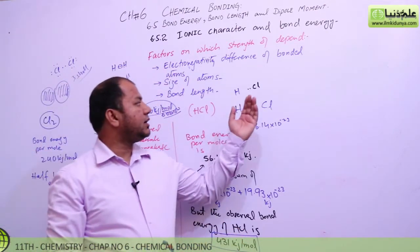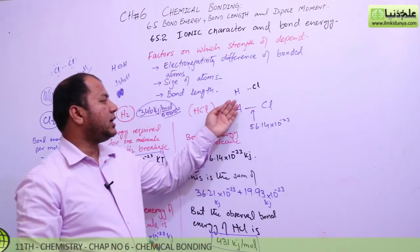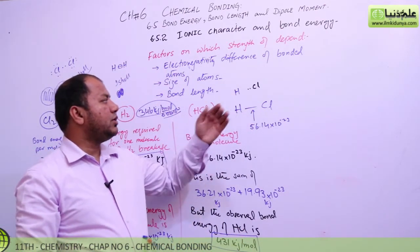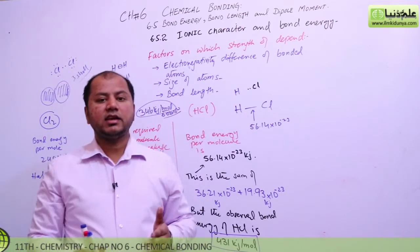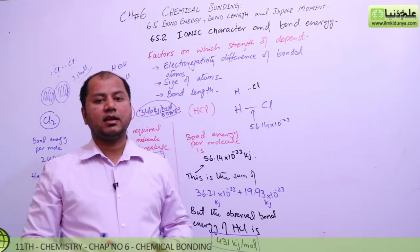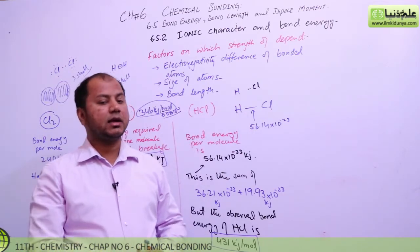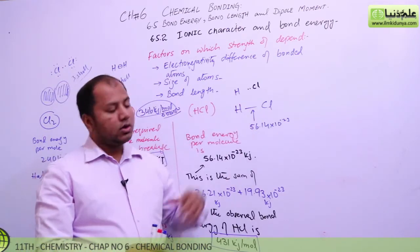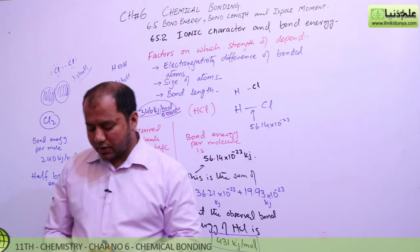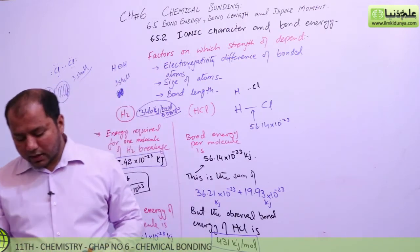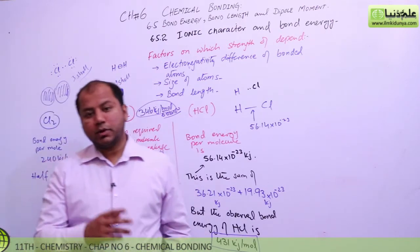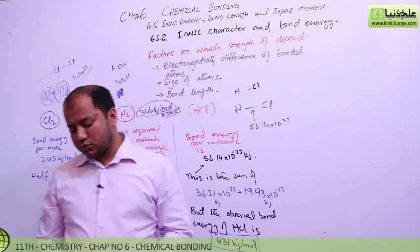Because of the electronegativity difference, the bond energy released in HCl is 431 kJ per mole — and that is extraordinary. Scientists have noted this, and it is because of electronegativity that some ionic character is developing in the bond. The energy that should not be coming out is coming out — extra energy is being released because chlorine is more electronegative.